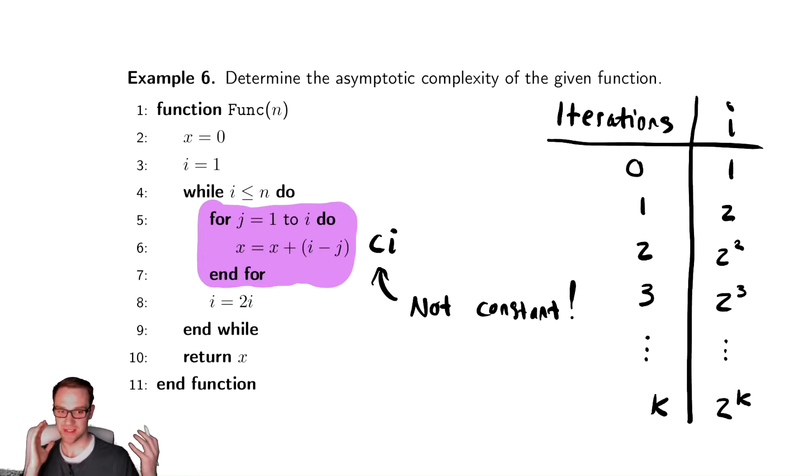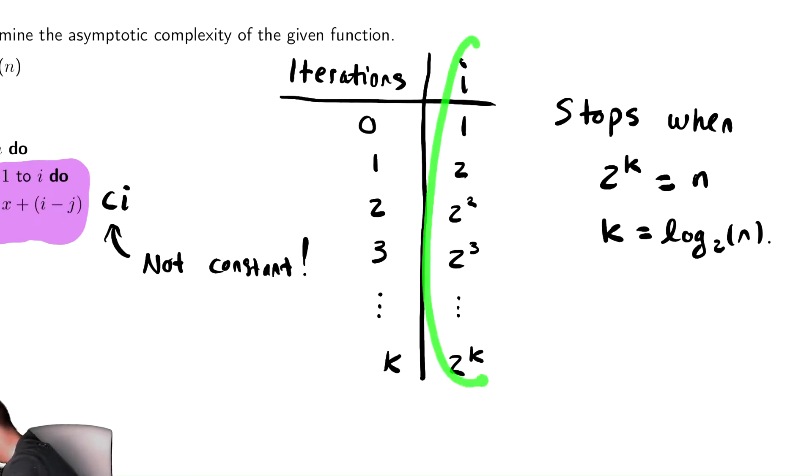So we need to come up with something else to do to analyze this. Our default technique of take the number of iterations, that value k, and multiplying it by the cost doesn't work, because the cost is changing. The cost depends upon i. And even just looking at this table, i is changing. I can see directly that it's changing.